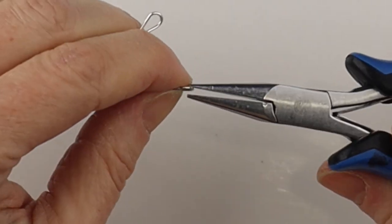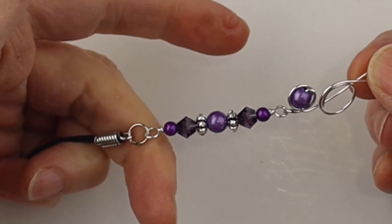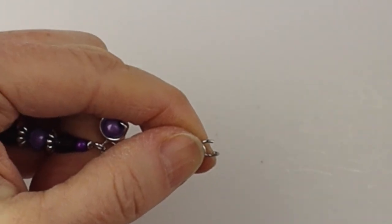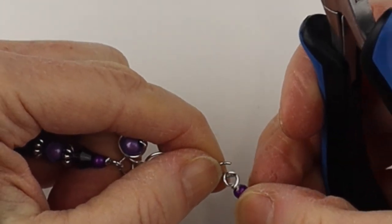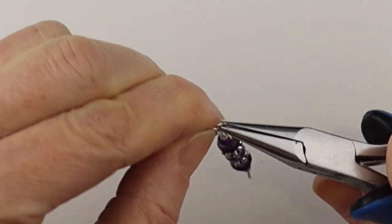And another jump ring. Open it up. Put it in the top of the treble clef. Add another beaded connector. And close it up.